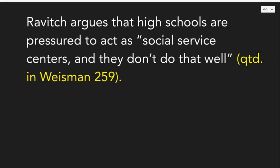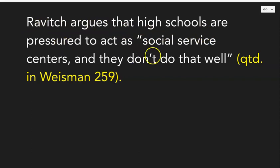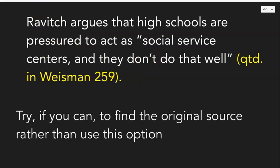If you have a source that quotes another source — I get this question every quarter — you use the abbreviation "qtd. in" and then the source you are looking at. In your writing itself, that's your moment to explain who is quoting what and give further information for readers. For example, "Ravitch argues that high schools are pressured to act as 'social service centers'" — in that situation, Ravitch is being quoted in Wiseman. Of course, if you can, try to find the original source rather than taking this option; the only reason you would take it is if you could not find the original source.